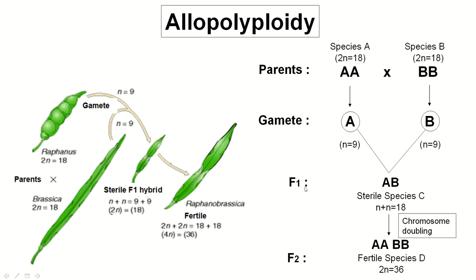Allopolyploidy also happens naturally in the wild. For some species, when the zygote is produced it will automatically undergo chromosome doubling very early in development, resulting in a fertile hybrid. In other plant species, the F1 will undergo mutation — chromosome doubling — in some parts of the plant, which will then suddenly become fertile and be able to reproduce.